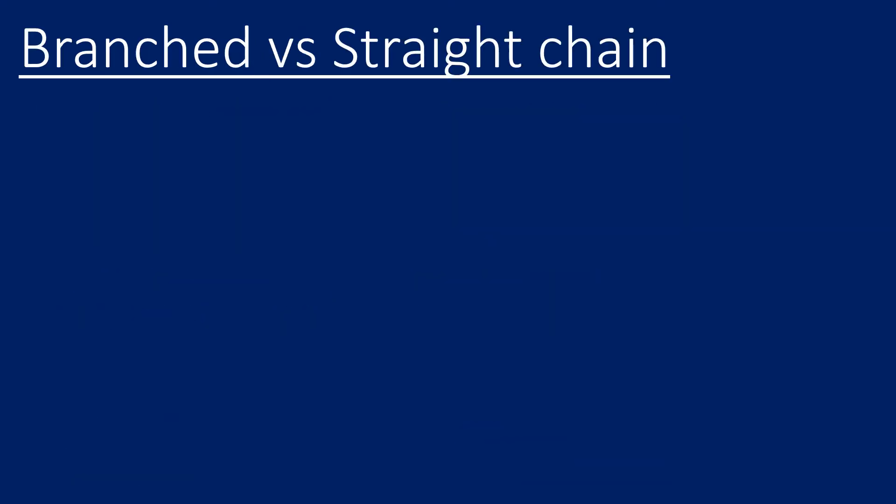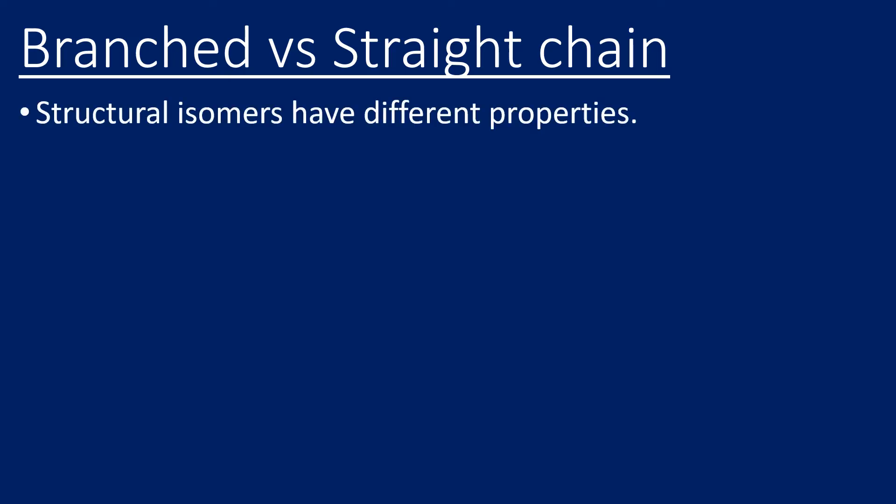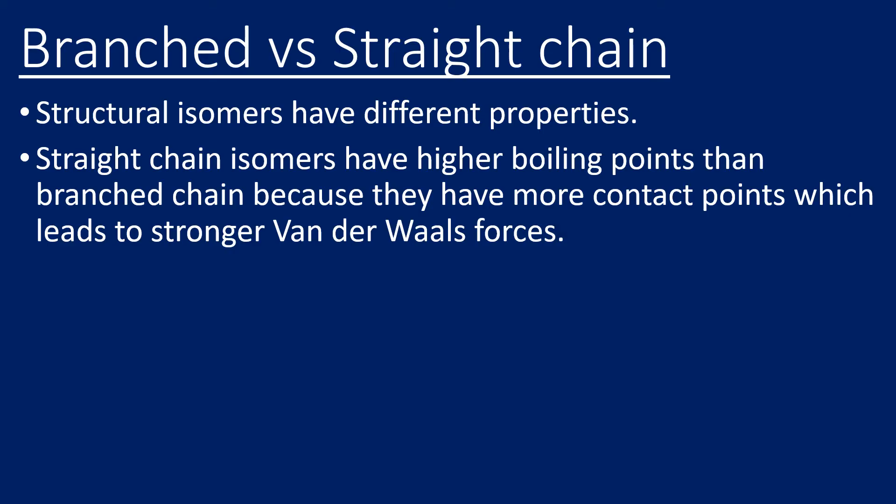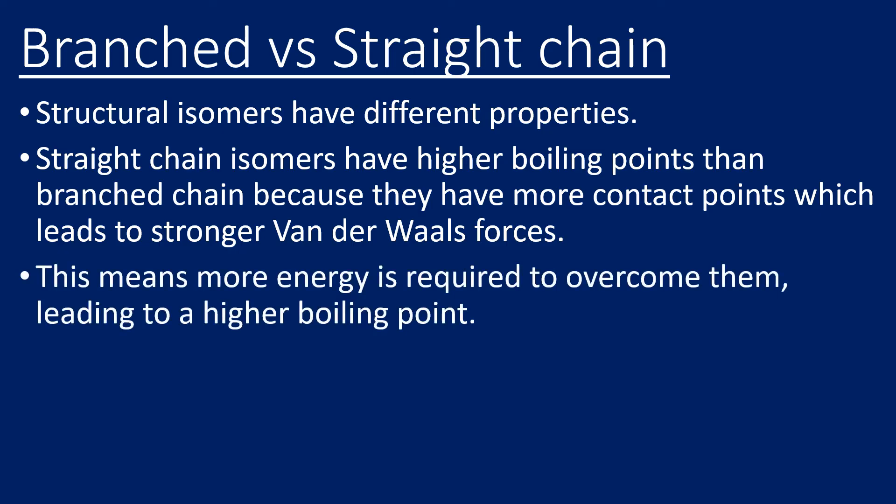Now, branched versus straight chain — this is a little bit harder to explain. We've seen previously that structural isomers have different properties. Straight chain isomers actually have higher boiling points than branched chain isomers because they have more contact points, which leads to stronger van der Waals forces. This means more energy is required to overcome them, leading to a higher boiling point.